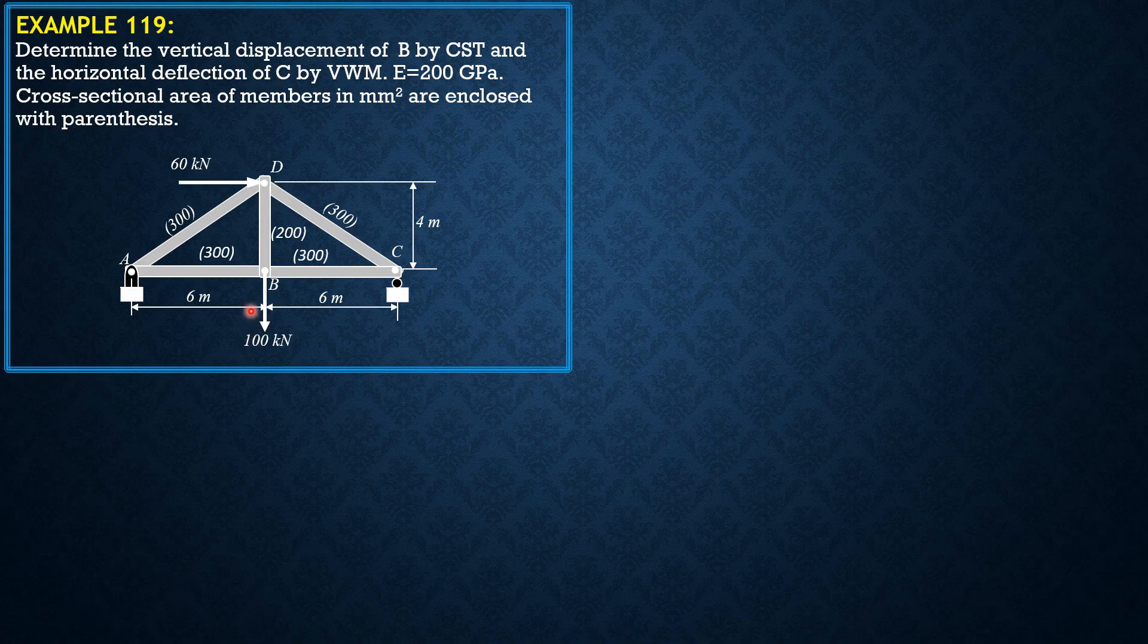So first let's compute the vertical reaction at A. Since at B there's a 100 kilonewton load, we apply a force P upward at B. We set this downward load as P to have a solution that is different from the preceding solutions, so you'll be exposed to another way of solving the problem. If the result is positive, the vertical displacement would be downward.